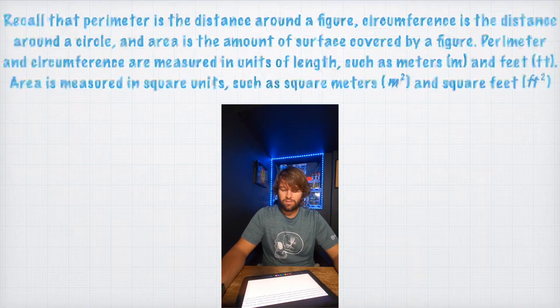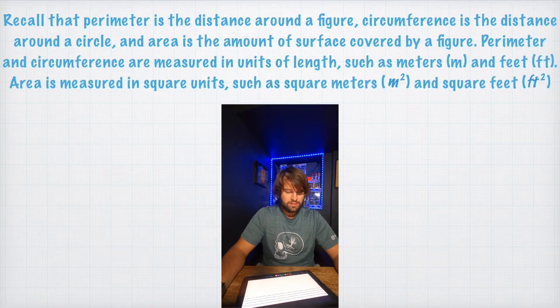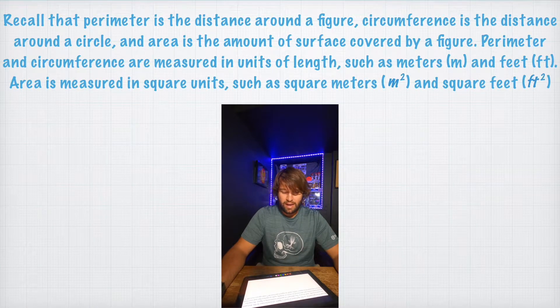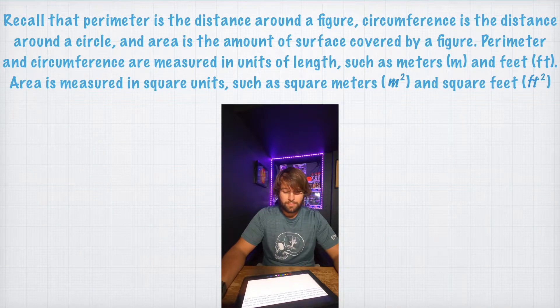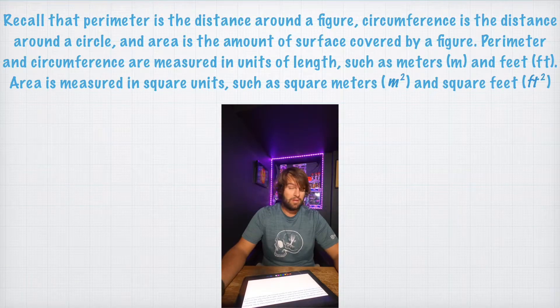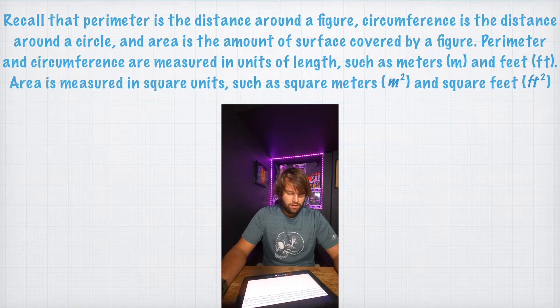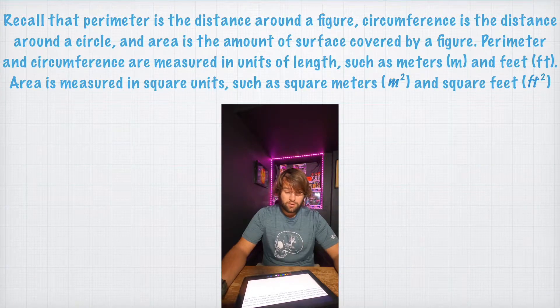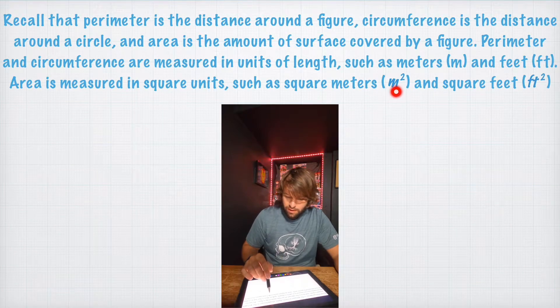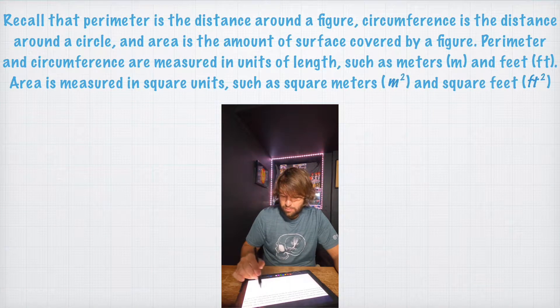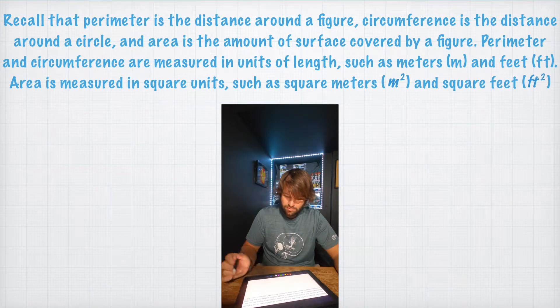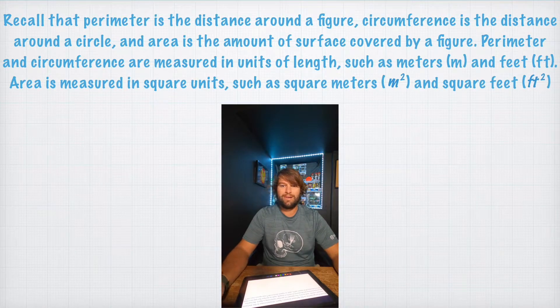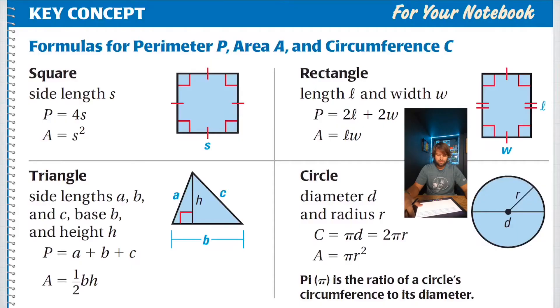Recall that the perimeter is the distance around a figure. Circumference is the distance around a circle. And the area is the amount of surface covered by a figure. Perimeter and circumference are measured in units of length, such as meters or feet. Area is measured in square units, such as square meters, which when you write it, you can write M with a little 2 above it, or square feet. Just shorthand, save you some time.